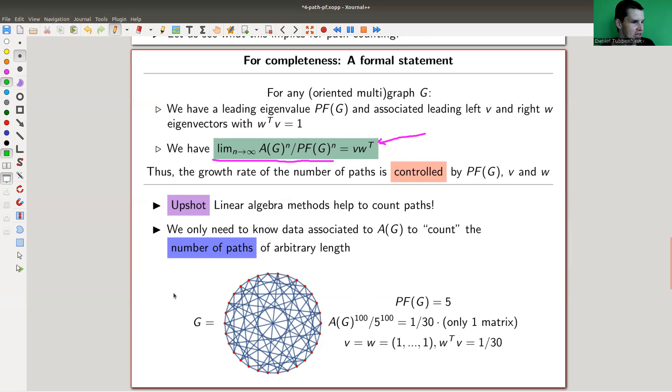All right, so let's have a look at an example. So here, my little graph, well, whatever, it's what it is. The PF eigenvalue is 5. And A to the 100 over 5 to the 100 is 1 over 30 times the matrix which only has ones. Just by the symmetry of this beast, it turns out to be the case. So every entry is essentially of size 5 to the 100 over 30. And in this case, the Perron-Frobenius eigenvector is pretty easy. It's v equals w, it's just all ones and there are 30 vertices. So there are 30 ones of them and the corresponding value here is 1 over 30.